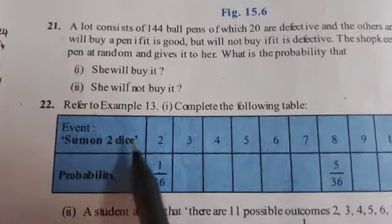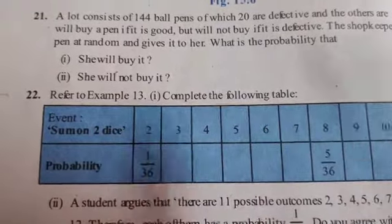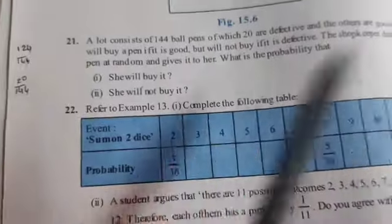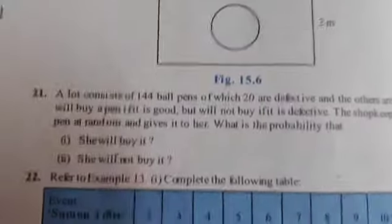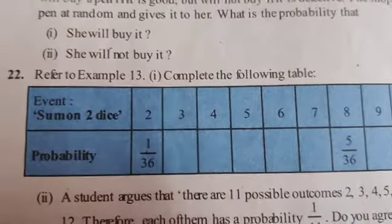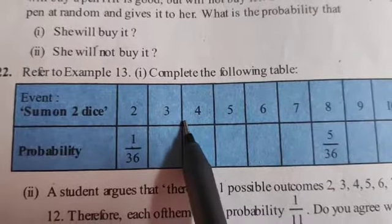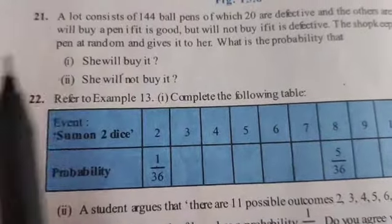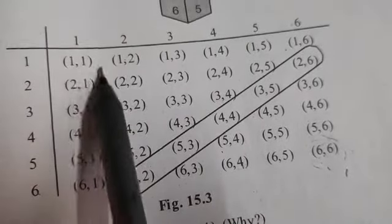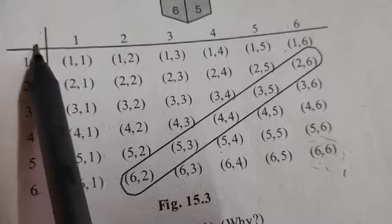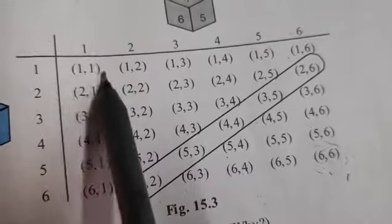Next — question 21/22: refer to Example 13. Complete the following table. In Example 13, we had prepared a table for the sum of two dice. Total possibilities are 36. Sum equal to 2: only 1+1 gives 2, so probability = 1/36 (already printed). Sum equal to 3: possible as 2+1 and 1+2, so 2 cases — probability = 2/36.